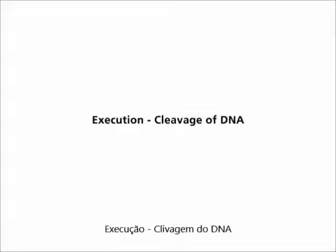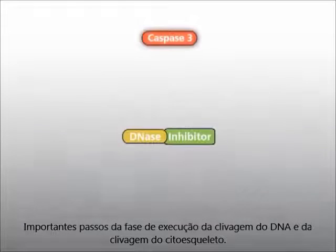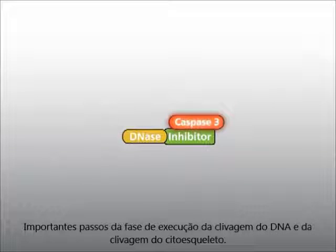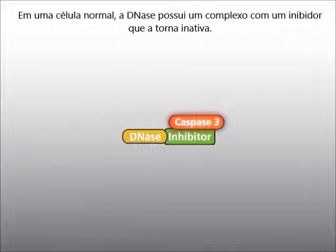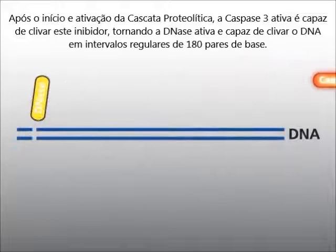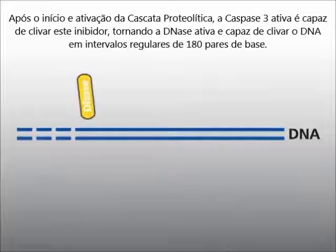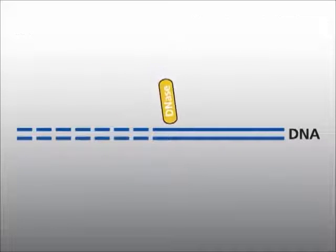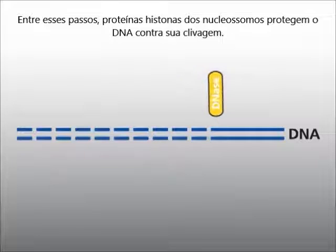Execution: cleavage of DNA. Important steps of the execution phase are the cleavage of DNA and the cleavage of the cytoskeleton. In the normal cell, DNase is complexed to an inhibitor and is inactive. After initiation and activation of the Caspase cascade, active Caspase 3 is able to cleave this inhibitor. Activated DNase then cleaves DNA at regular intervals of 180 base pairs, while histone proteins of nucleosomes protect the DNA in between cleavage sites.